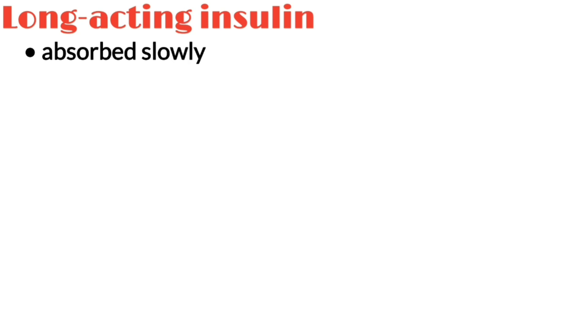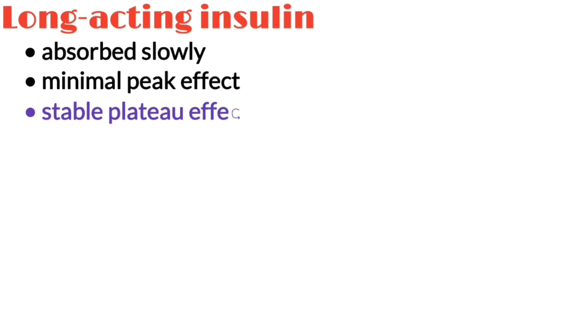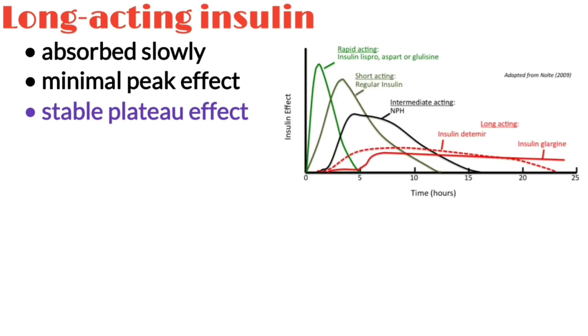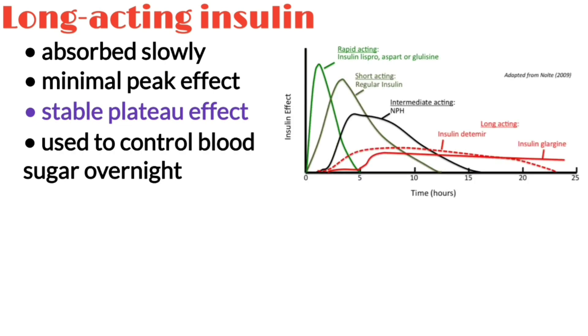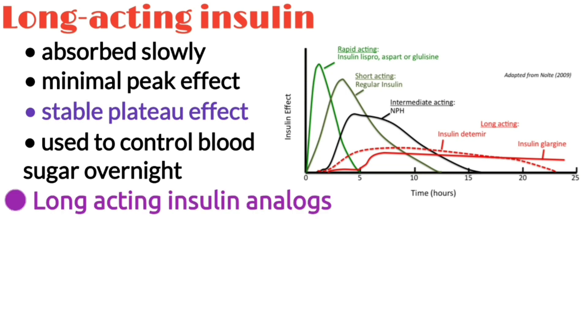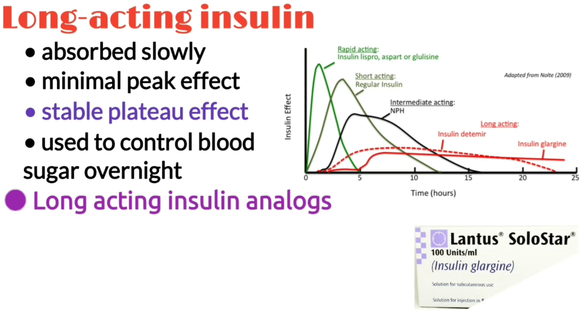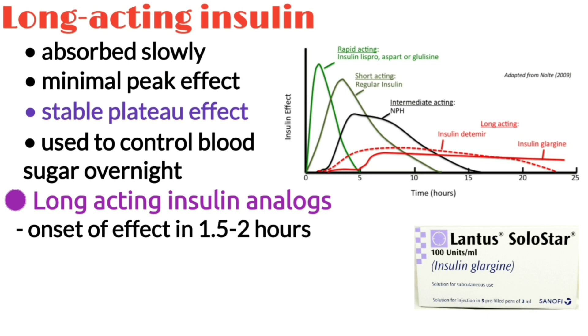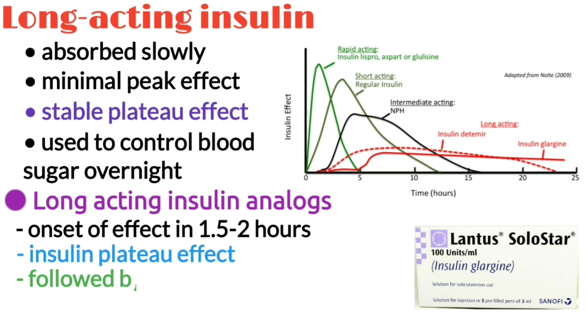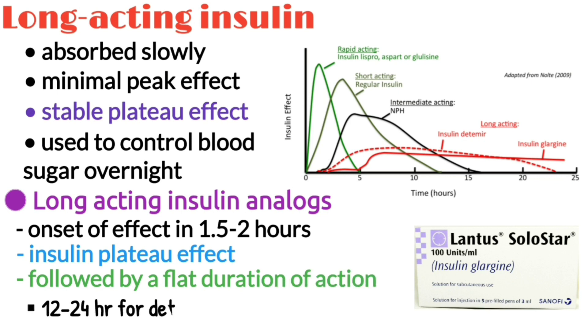The third and last type is long-acting insulin. Long-acting insulin is absorbed slowly, has a minimal peak effect, and a stable flat effect that lasts most of the day. It is used to control blood sugar overnight while fasting and between meals. Long-acting insulin analogs such as insulin glargine and insulin detemir have an onset of insulin effect in 1.5–2 hours, with a relatively flat duration of action that lasts 12–24 hours for insulin detemir and 24 hours for insulin glargine.